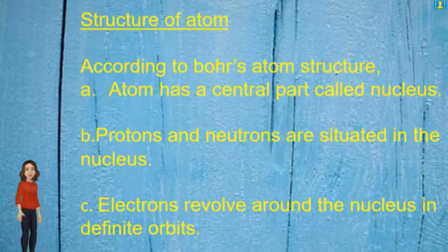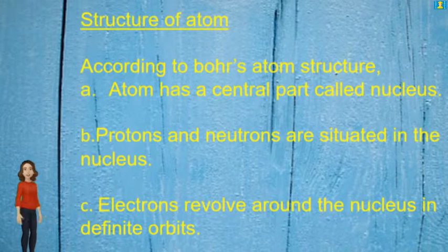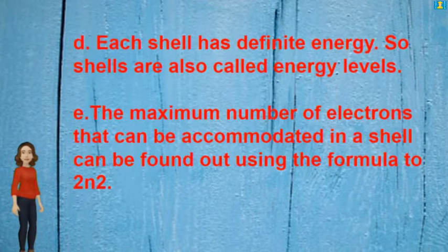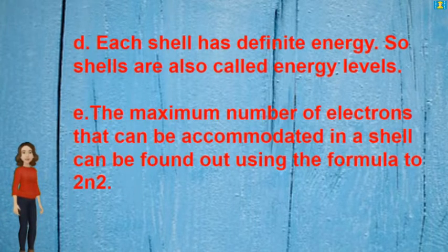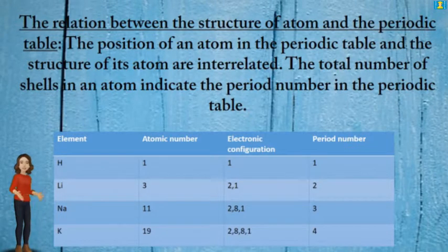Structure of atom: an atom has a central part called the nucleus. Protons and neutrons are situated in the nucleus. Electrons revolve around the nucleus in definite orbits. Each shell has definite energy, so shells are also called energy levels. The maximum number of electrons that can be accommodated in a shell can be found using the formula 2n².